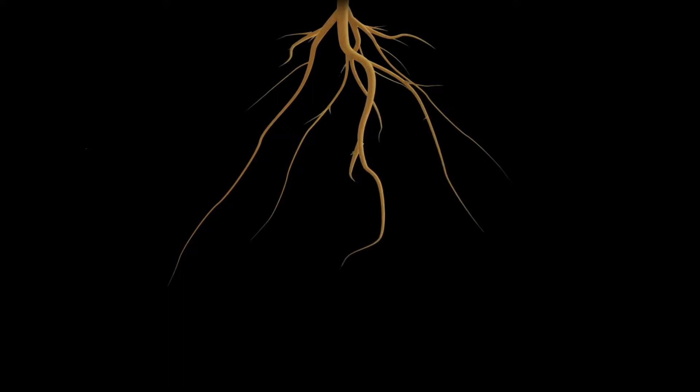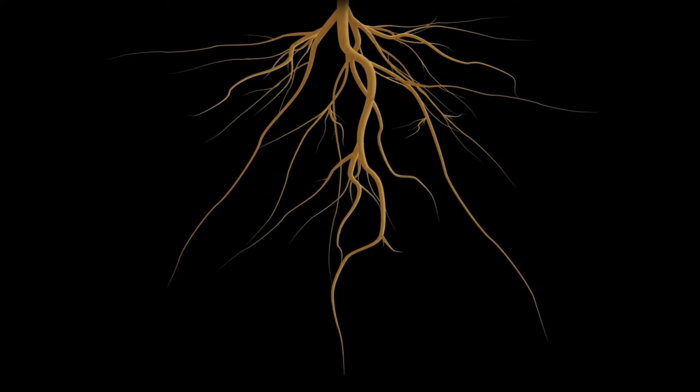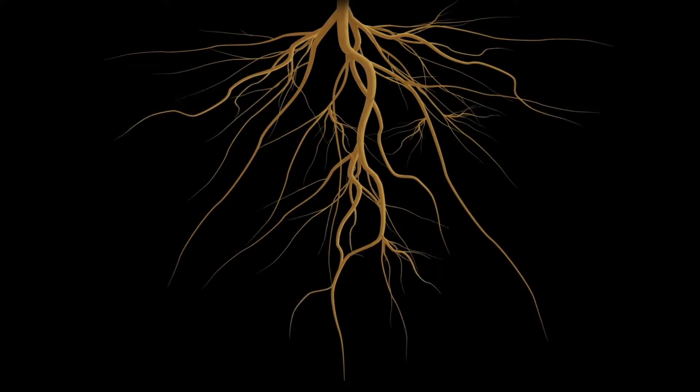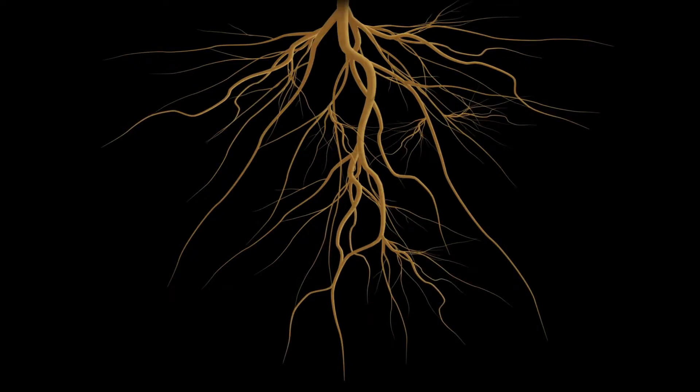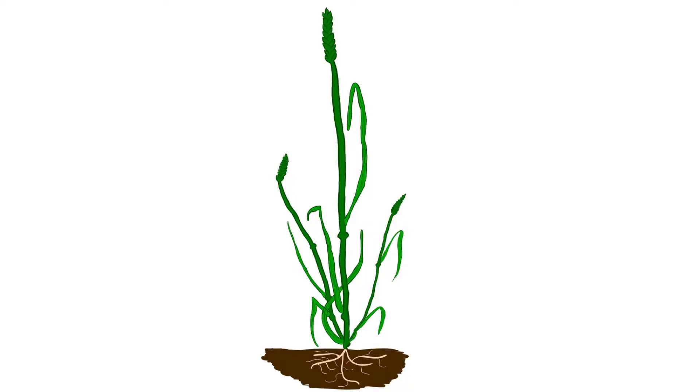Once the wheat is mature, the root system could extend between three and six feet, or more depending on soil conditions. Most roots are in the top 30 centimeters of soil. An important function of this system is to prevent the wheat from being blown over as the wheat grows taller and taller.